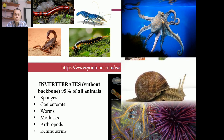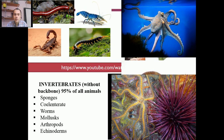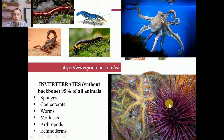Spiny-skinned animals are called echinoderms. As you see here, they have got many spines. Starfish and sea urchin are examples of echinoderms. They live under the water and they respire by means of gills.